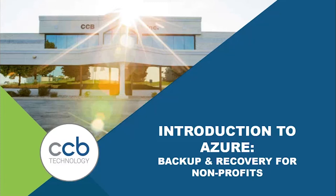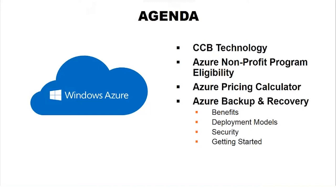Let's jump right into it. Here's a quick agenda of what we're going to be talking about in the next 30 minutes. First, a quick overview of who CCB Technology is. Then the Azure nonprofit program — eligibility, guidelines, and details. Then the Azure pricing calculator and how to use it for backup and recovery pricing. And last, the Azure backup and recovery solution set: benefits, deployment models, security, and next steps.